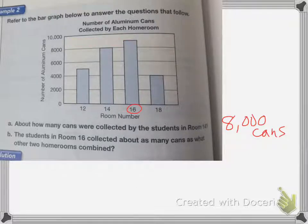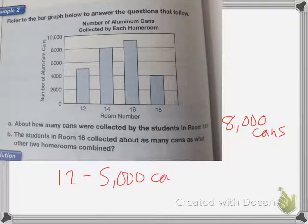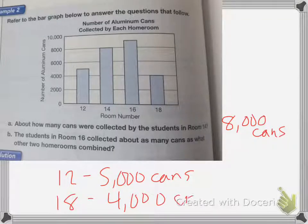So we know that room 12 gathered about 5,000 cans. And room 18 gathered about 4,000 cans. So 4,000 cans plus 5,000 cans is the 9,000 cans.